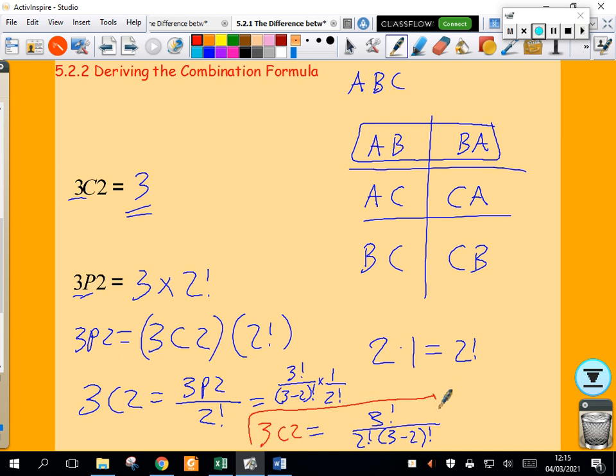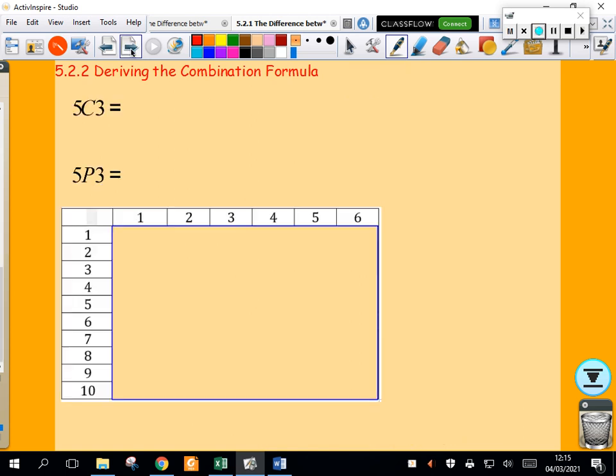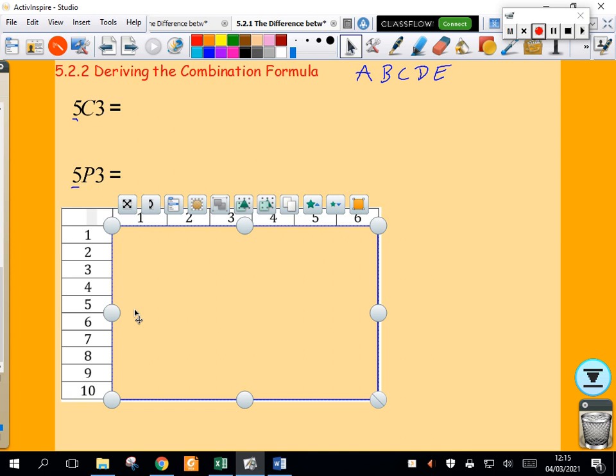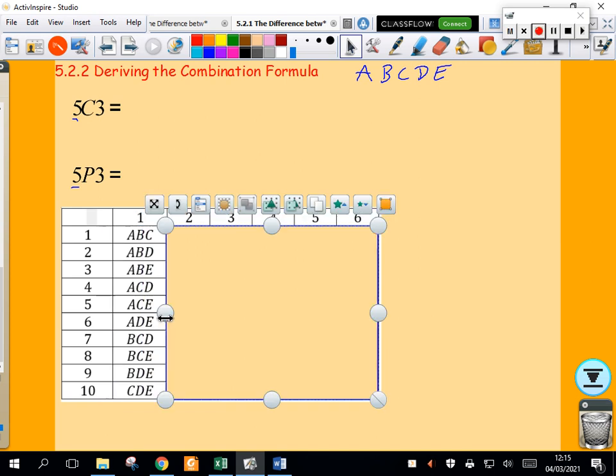Let me look at another example and then we'll just identify the pattern. I want to think about 5 choose 3 and 5 permute 3. The population size is 5, I've got 5 things - A, B, C, D, and E. And I want to look at all the choices taking 3 at a time. I've done out a table here. Taking 3 at a time, there are 10 choices.